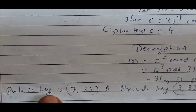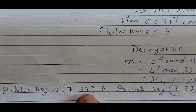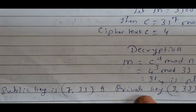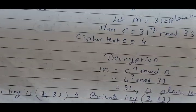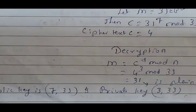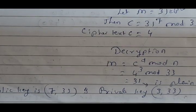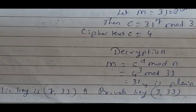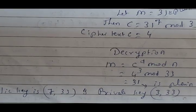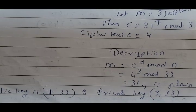So the public key is (7, 33) and the private key is (3, 33). Thank you.